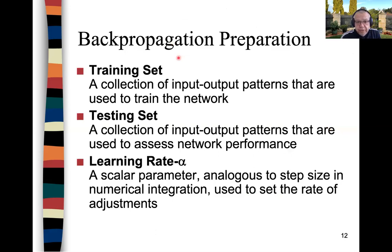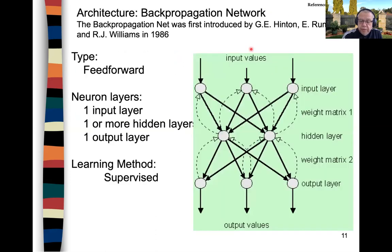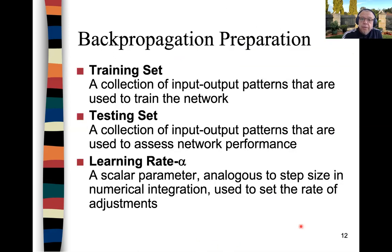The training set is a collection of input-output patterns that are used to train the network. You have input patterns and the corresponding output patterns. Because it's supervised, this is a labeled dataset with inputs and corresponding ground truth labels.